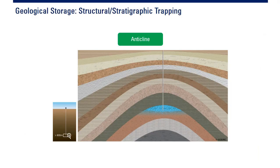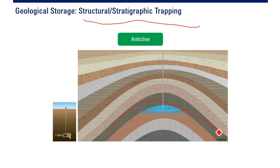These are the storage mechanisms. The first storage mechanism is structural and stratigraphic trapping. If you have a cap rock here with very low permeability and you inject CO2 plume here, because of this structural trapping and cap rock, CO2 will be trapped permanently — CO2 cannot go up. Remember: CO2 is in supercritical form, not gas form, so it will be like water. With the cap rock, the CO2 cannot go up — it will be trapped.